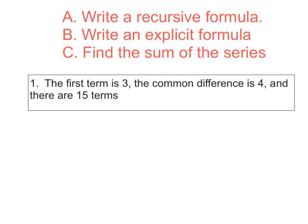We're going to cover three things: write a recursive formula, write an explicit formula, and find the sum of the series. The first term is 3, the common difference is 4, and there are 15 terms. Is this arithmetic or geometric, and what gives it away? Hopefully you're saying arithmetic — the key giveaway is it's asking for a common difference. That tells me it's arithmetic; it uses d for difference.